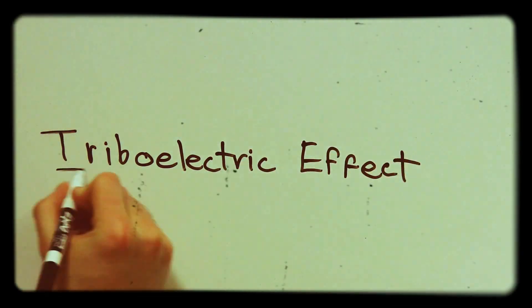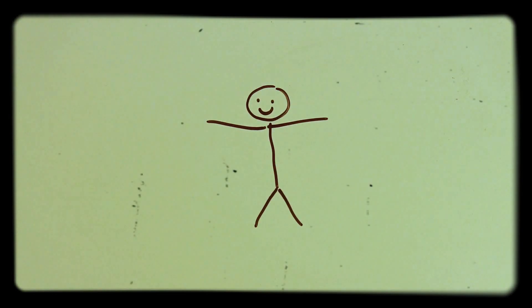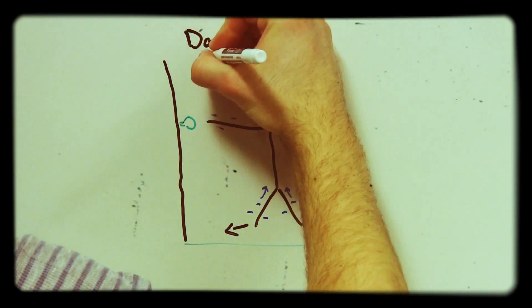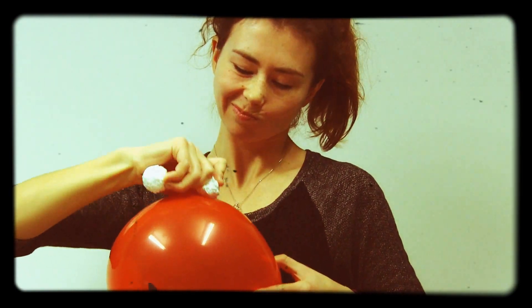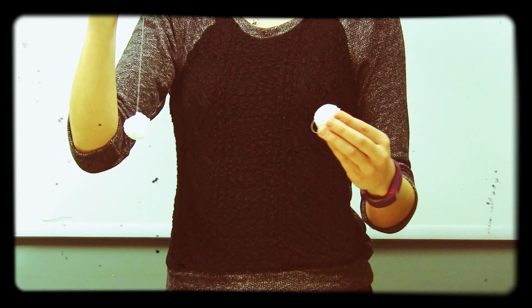The triboelectric effect comes from the Greek word tribo, which means rubbing. Have you ever rubbed your feet on the carpet and then gotten shocked? That's because the rubbing of your feet on the ground caused you to build up charge. Then when you got close to the doorknob, you got shocked because the charges are jumping from you to the knob. These two styrofoam balls were given the same charge by rubbing them with the same type of balloon. This causes them to repel each other.